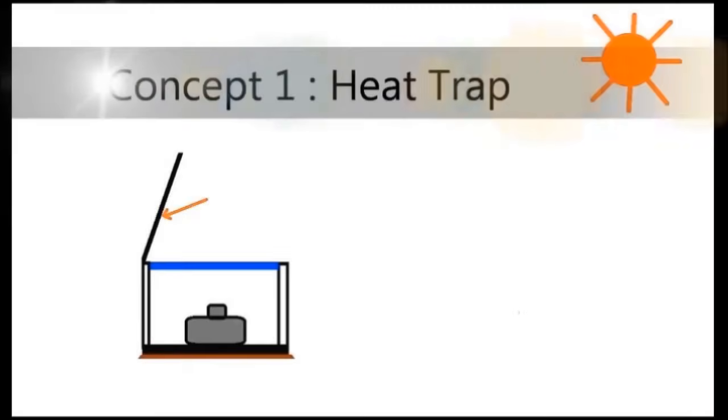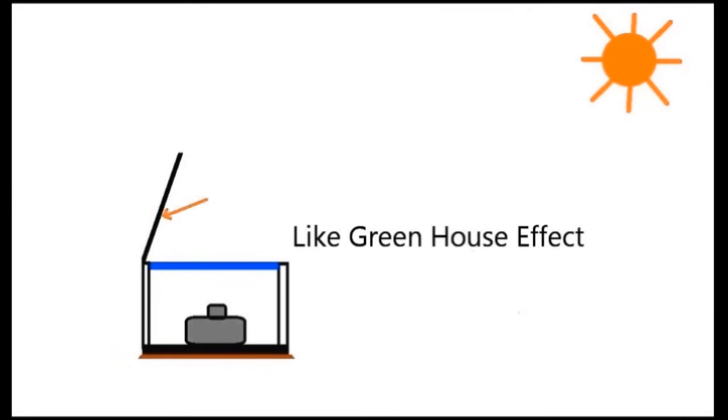In a box type, the heat gets reflected by a reflector into a box and then gets trapped by the top glass like a greenhouse effect and heats up the cooking utensils.